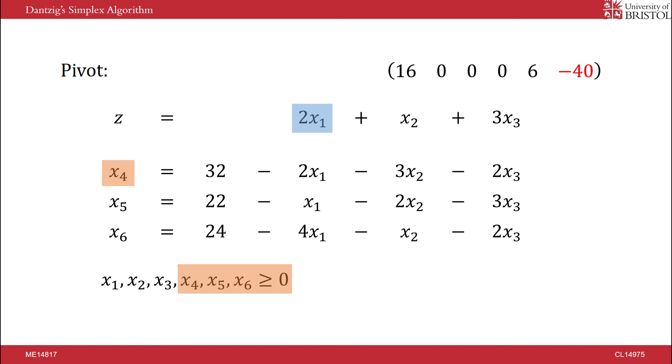Constraint 1 limits x1 to 16. Constraint 2 limits x1 to 22. Constraint 3 limits x1 to 6. It follows that the tightest constraint is x1 equals 6 given by the third constraint. Therefore, we will perform a pivot operation between x1 and x6.